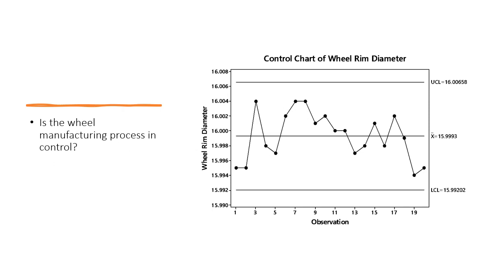So based on this control chart, is the wheel manufacturing process in control? We can see no points are outside of the control limits, indicating that the process is stable over time.